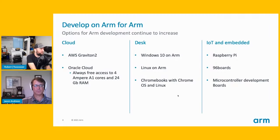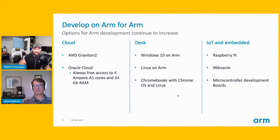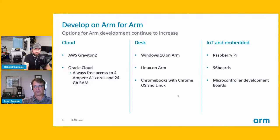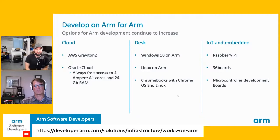We recently relaunched what we call the Works on Arm program. Along the lines of what Jason just said about Oracle with their free tier — AWS launched something similar, and OSU OSL (OSU University Open Source Labs) has something similar, as well as Equinix. You can go to the Works on Arm page on developer.arm.com. If you have a cool project where you're porting something to Arm, great place to get access to resources for building your stuff, especially before you decide to buy your own instance.